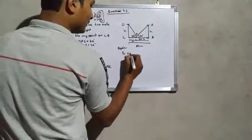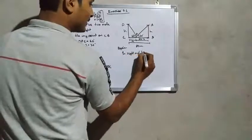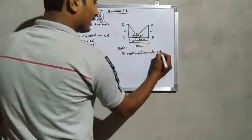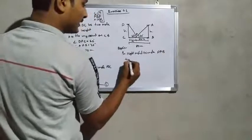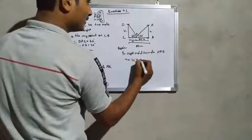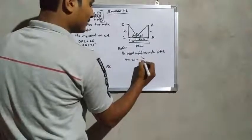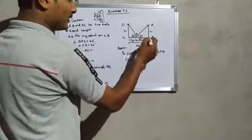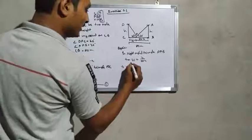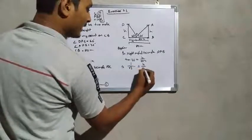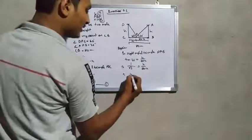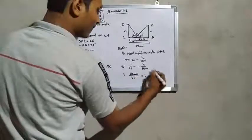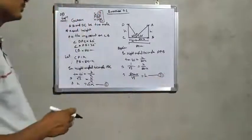Again, in right angle triangle PAB, tan 30 degrees equals h over PB. PB is the base, so the value of tan 30 degrees, which is 1/√3, equals h over (80 minus x). Doing cross multiplication, we get (80 minus x)/√3 = h. This is Equation 2.